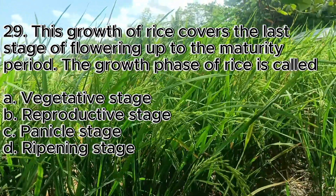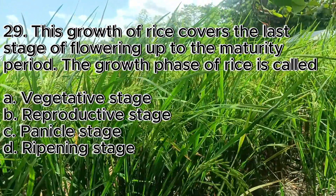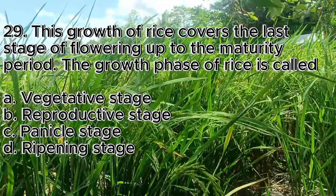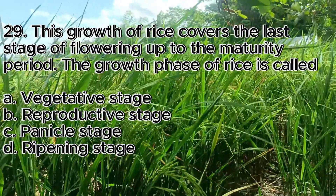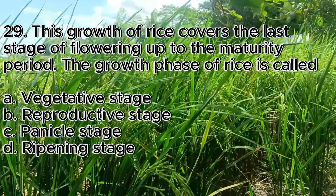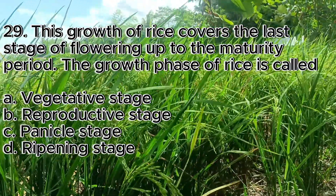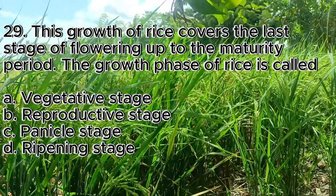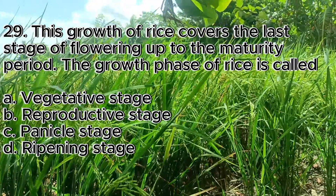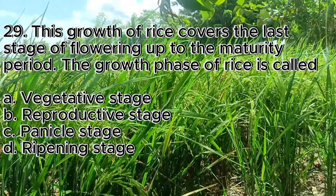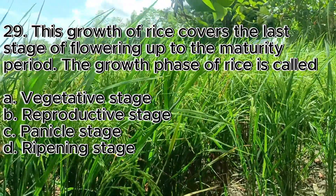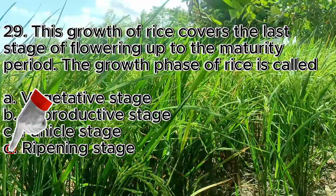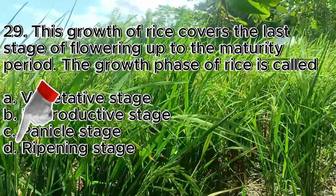Number 29. This growth of rice covers the last stage of flowering up to the maturity period. The growth phase of rice is called? A. Vegetative stage, B. Reproductive stage, C. Panicle stage, D. Ripening stage. The answer is letter D, ripening stage.